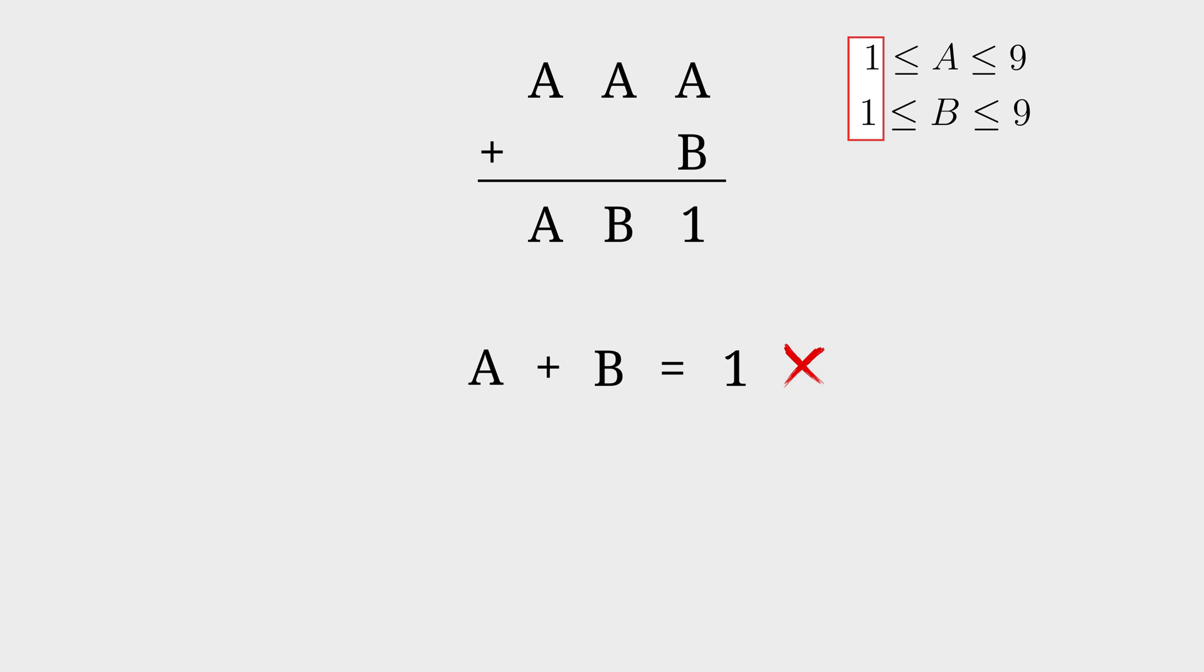We can rather say that A plus B is 11, which will give you a 1 underneath the addition line. Let's call this equation equation number 1.